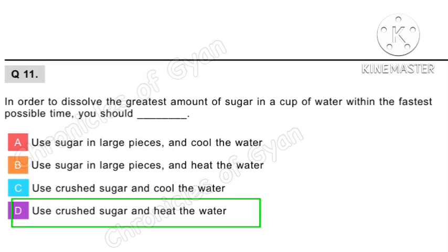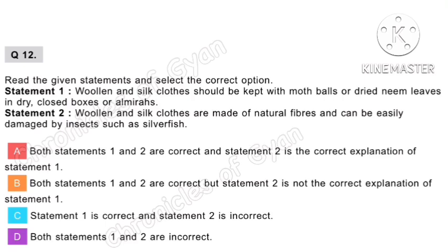Question 12. Read the given statements and select the correct option. Statement 1: Woolen and silk clothes should be kept with moth balls or dried neem leaves in dry cloth boxes or almirahs — this is the correct method. Statement 2: Woolen and silk clothes are made of natural fibers and can be easily damaged by insects such as silverfish — this is also correct. So the correct option is option A: both statements 1 and 2 are correct and statement 2 is the correct explanation of statement 1.